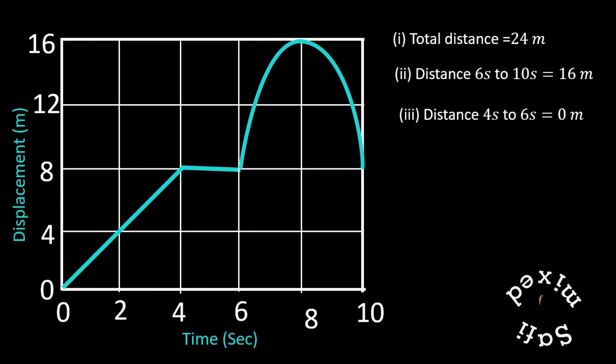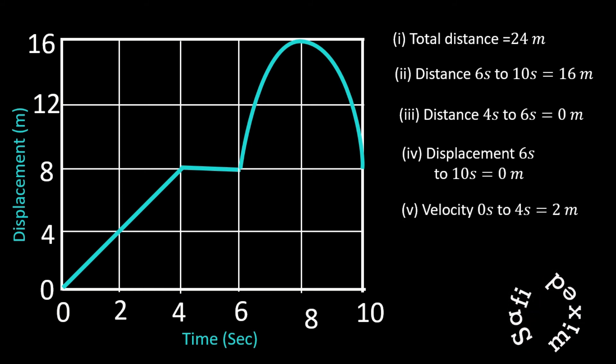Number three: Convince yourself that the distance covered from fourth to sixth second is zero. Number four: Convince yourself that the displacement from sixth second to tenth second is zero.